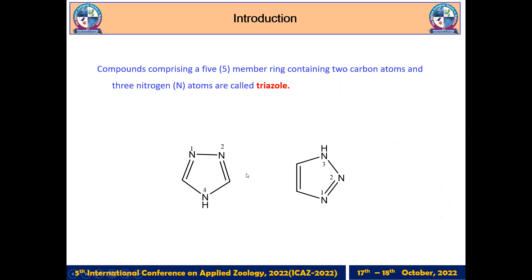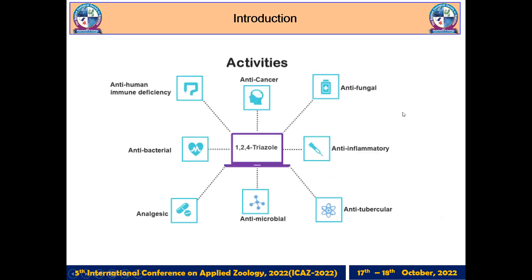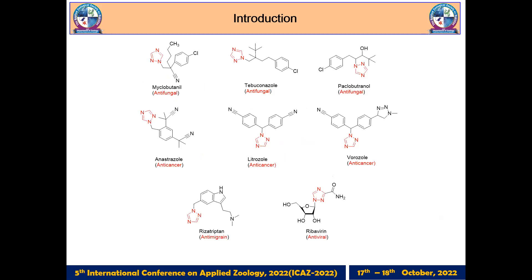Triazoles are heterocyclic compounds containing three nitrogen atoms and two carbon atoms. Depending upon the position of these nitrogen atoms, they have two different isomers: the 1,2,4-isomer and the 1,2,3-isomer. The 1,2,4-triazole is reported to have significant activities like anti-cancer, antifungal, anti-inflammatory, antimicrobial, and antibacterial, among others.